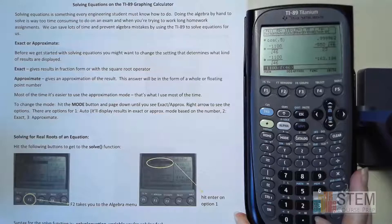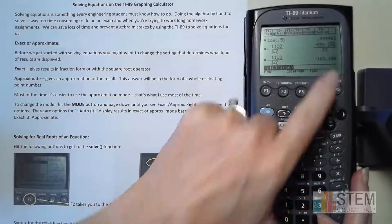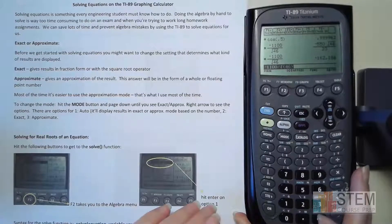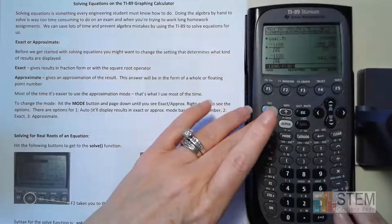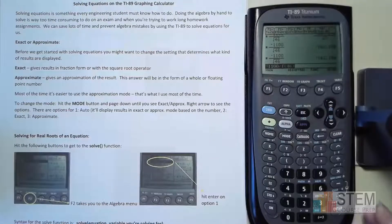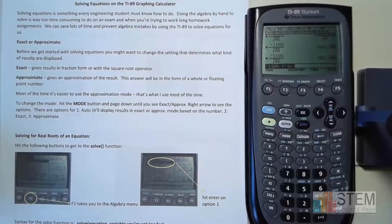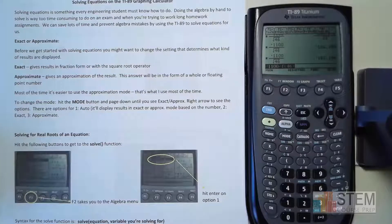If you happen to use auto mode, which I think is the default setting, and you still want floating point numbers, you would hit the diamond button and then enter. It'll switch it over for you. You have to remember to do diamond and then enter, which I always forget to do.